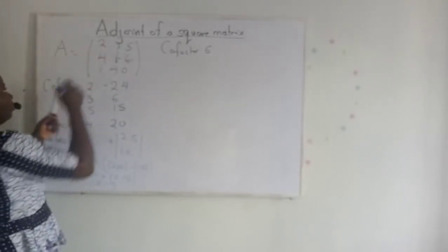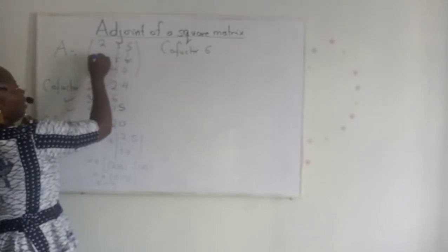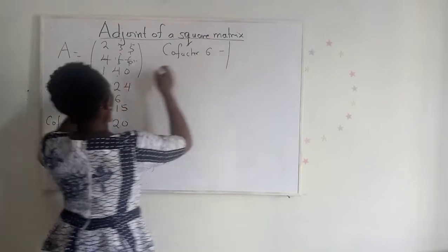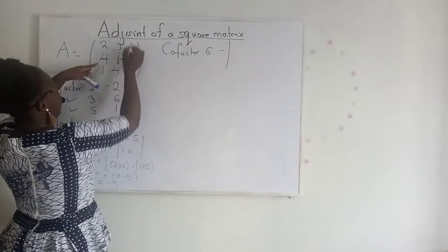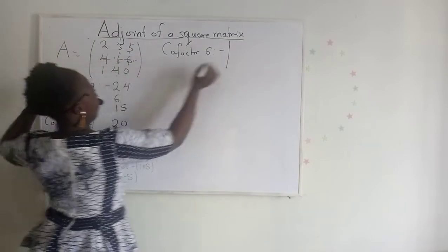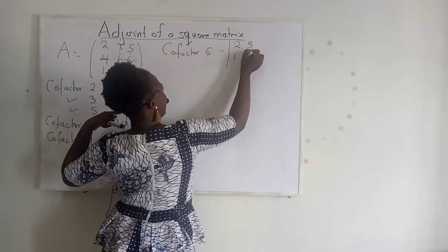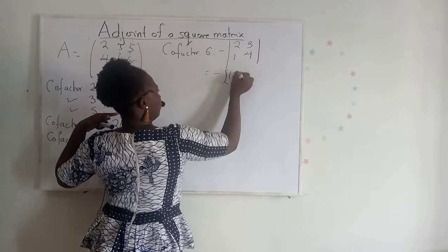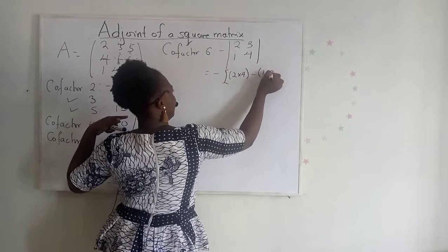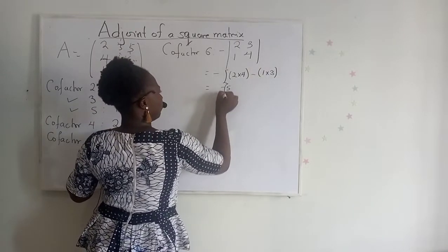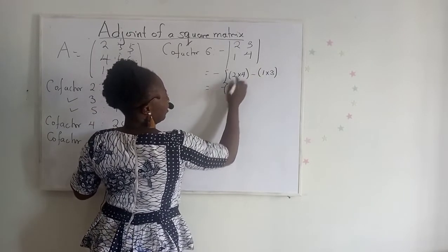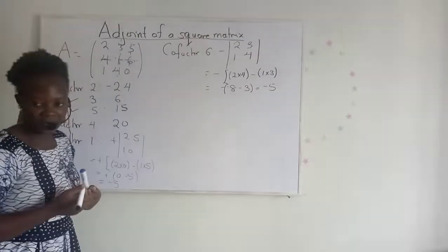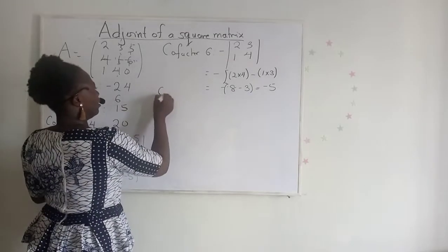The cofactor of 6: after striking out the column and the row, the place sign is negative. I have the submatrix: 2, 3 / 1, 4. The determinant is 2 times 4 minus 1 times 3, which is 8 minus 3, giving minus 5. So the cofactor of 6 is negative 5.